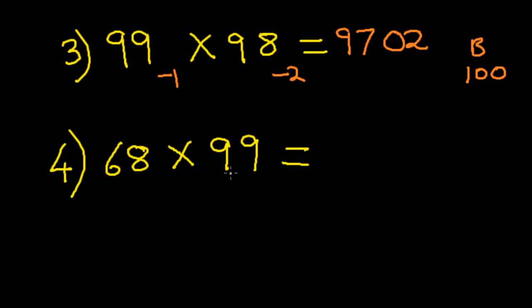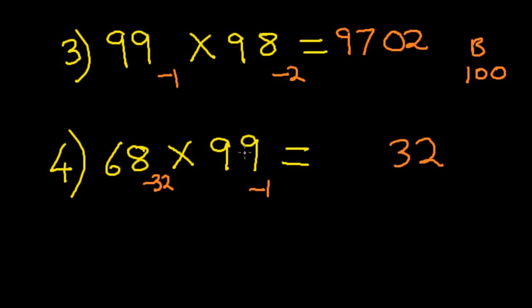Let us multiply 68 and 99. Both these numbers are closer to 100. So when we subtract: 68 minus 100 gives minus 32, and 99 minus 100 gives minus 1. We multiply these two numbers: minus 32 and minus 1 gives 32. And 99 minus 32, or 68 minus 1, will give you 67. That's the answer: 6732.